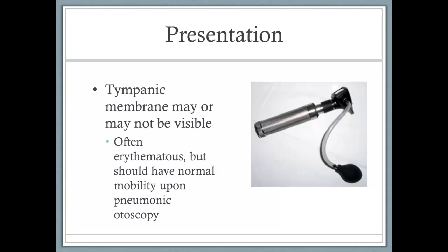Upon examination, the tympanic membrane may or may not be visible depending on the level of edema and debris present from the infection. You want to use the insufflator bulb on your otoscope to check for tympanic membrane mobility. In otitis externa you should see normal tympanic membrane mobility, but in acute otitis media the mobility would be definitely less mobile — that's a key difference between the two. When examining patients' ears, for adults you want to pull up and back on the auricle, and for young children you pull down and back.